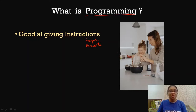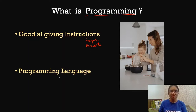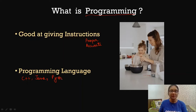Now, when we are talking about instructions, we give instructions in one or another particular language. If we are giving a recipe to somebody, we give it either in our mother language, English, or Hindi. Similarly, a computer also has a language that it understands. It does not understand Hindi or English, but it understands programming language. So when we need to give instructions to a computer, we use a programming language. Some of the most popular programming languages are C++, Java, and Python.